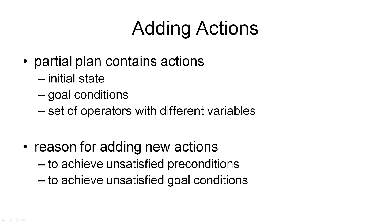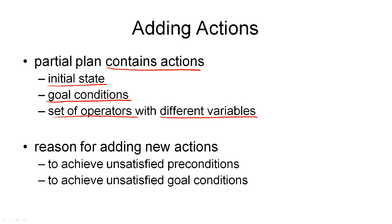The first component of a partial plan were the actions, or to be more precise, partially instantiated operators. In general, the partial plans we'll be considering contain the following actions. The first thing they contain is a representation of the initial state, and then they will also hold a representation of the goal conditions. Having initial state and goal conditions as part of the actions in our partial plan simplifies the representation. Normally, most of the actions in our plan will be partially instantiated operators from our domain. One thing that is important here is that when an operator is added to our plan as a partially instantiated action, it gets a new set of variables that is different from all the variables we've previously used. So the actions in our plan don't share variables.